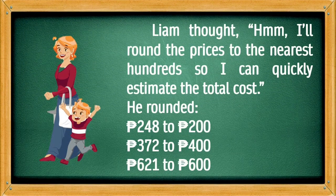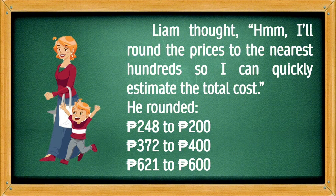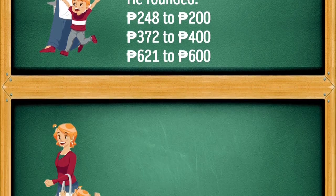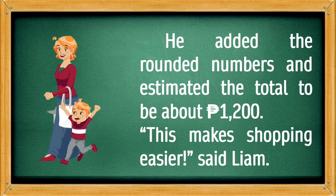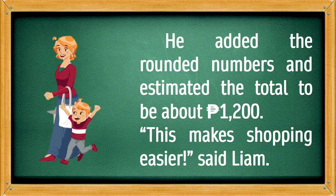Liam thought, hmm, I'll round the prices to the nearest hundreds so I can quickly estimate the total cost. He rounded 248 to 200, 372 to 400, 621 to 600. He added the rounded numbers and estimated the total to be about 1,200. This makes shopping easier, said Liam.